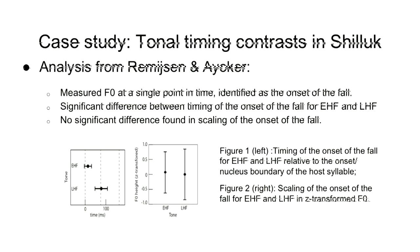The way they did this was to measure F0 at a particular point in time — the onset of the fall — finding where it happened in time and how high F0 was at that point. What they found: the early high fall and late high fall pretty clearly don't overlap in timing — one is earlier relative to the beginning of the tone-bearing syllable than the other. The scaling of that target point, though — those error bars pretty obviously overlap, with no apparent scaling difference. They conclude on that basis that this is a timing distinction without anything else built in phonetically.